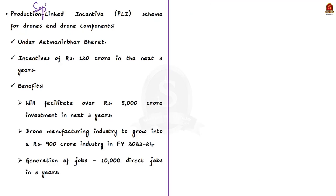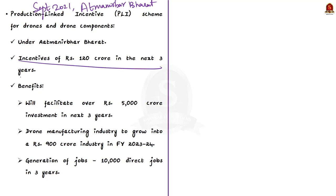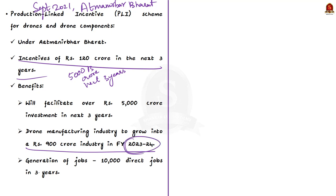In September 2021, under Atmanirbhar Bharat, the Production Linked Incentive (PLI) scheme for drones and drone components was launched. Incentives of ₹120 crore will be given over the next three years, facilitating over ₹5,000 crore investment. Government estimates project it may grow into a ₹900 crore industry in FY 2023-24, generating over 10,000 direct jobs in three years.